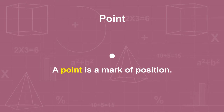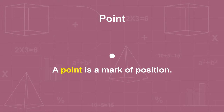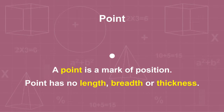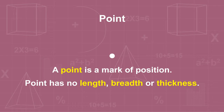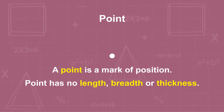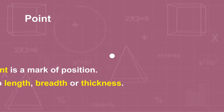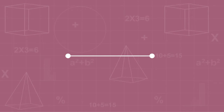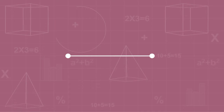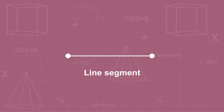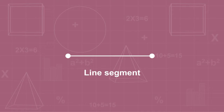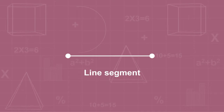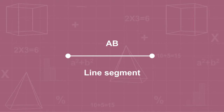A point is a mark of position. A point has no length, breadth, or thickness. The straight path between two points is called a line segment, denoted by AB.